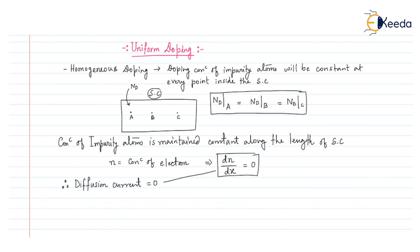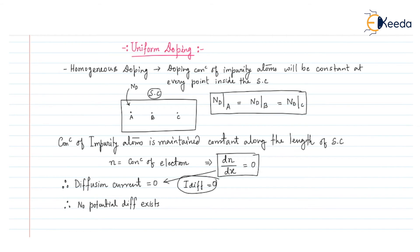We can say that the diffusion current I_diffusion equals zero. Similarly, in a uniform doping profile, there will be no potential difference developed inside the semiconductor. No potential difference exists, so we can say that the electric field E inside the semiconductor will also be zero.